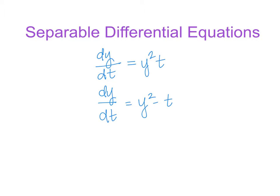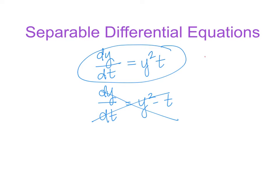The reason it has to be a product is that we're trying to separate everything involving y from everything involving t. Because it's a product, we can take everything involving y and put it on one side of the equation, everything involving t on the other, and the equality still holds. We're then able to anti-differentiate, which gets rid of the dy and dt, and then we can solve for y.